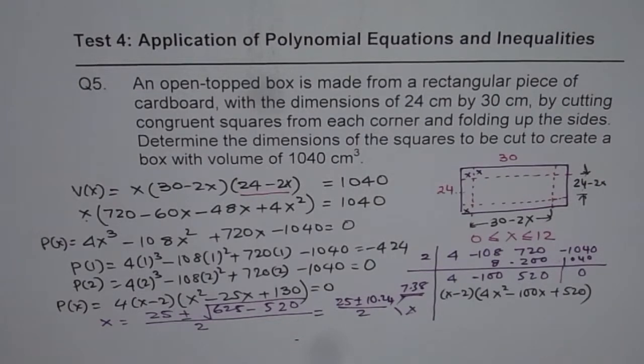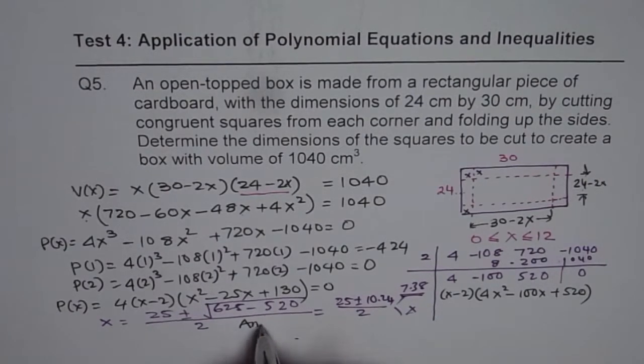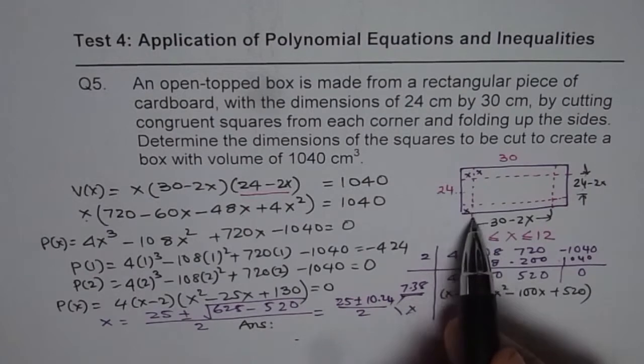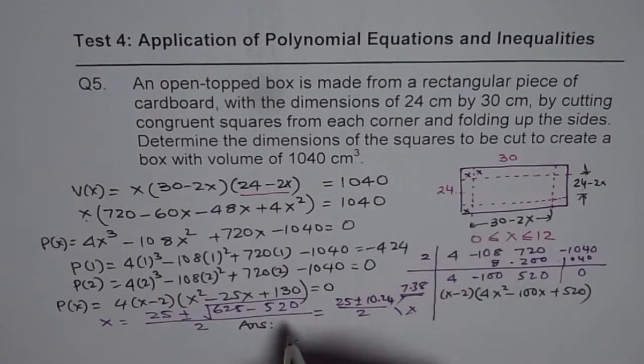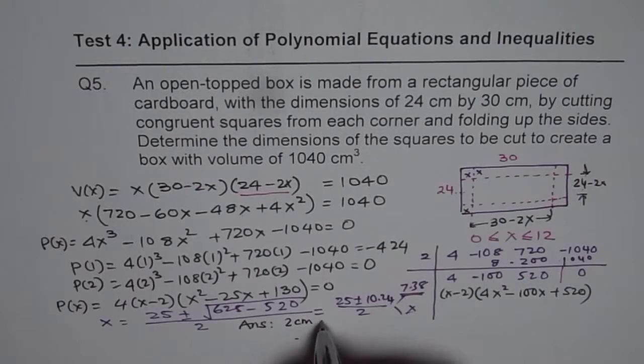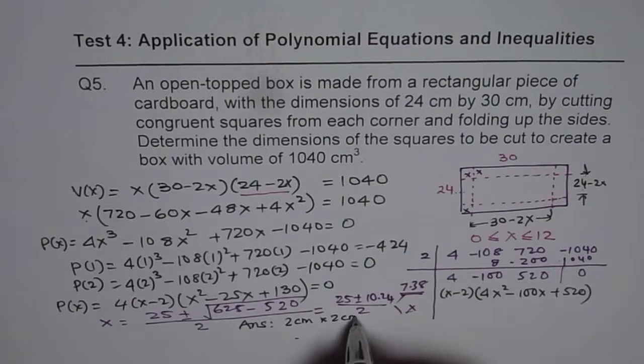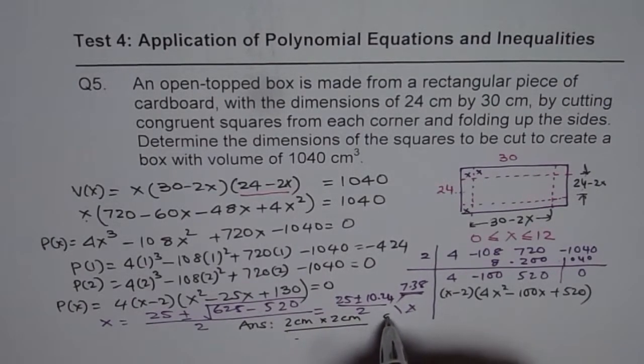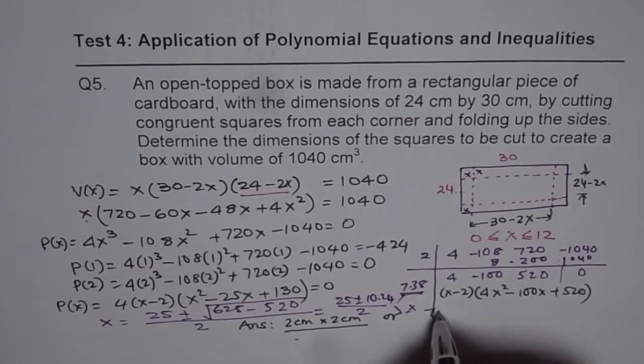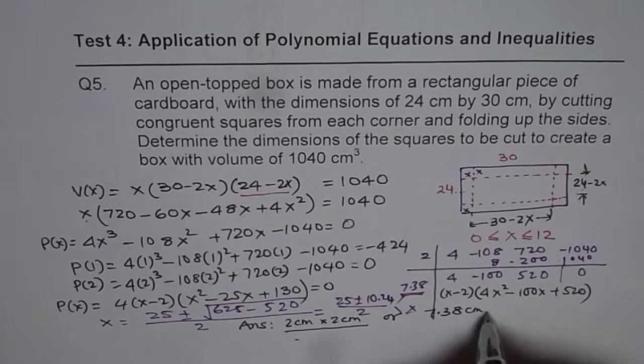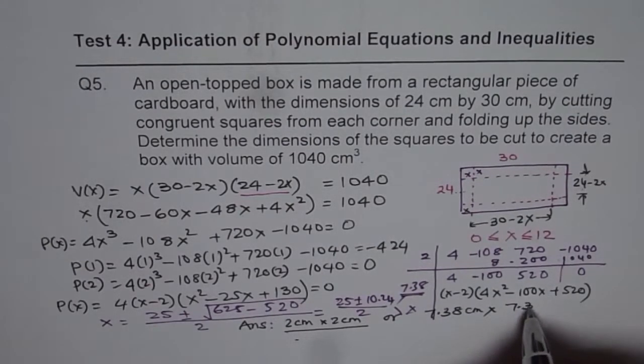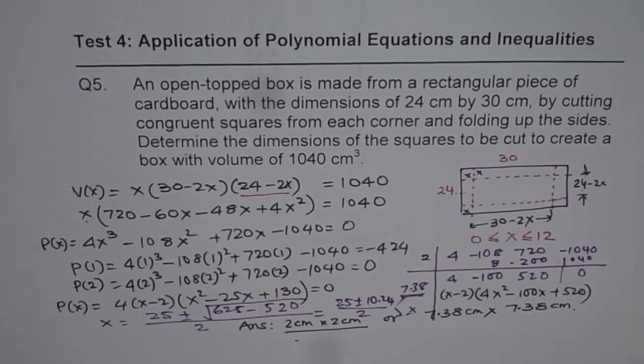So, we can write down our answer. And our answer is, the dimensions of the squares should be 2 centimeter by 2 centimeter. That is one possible solution. Or, 7.38 centimeter by 7.38 centimeter, right?